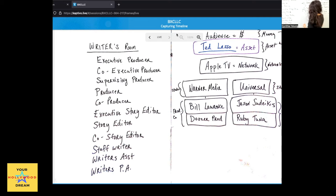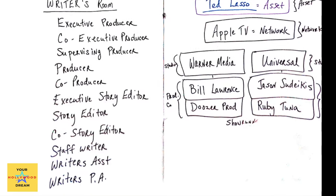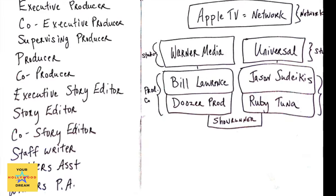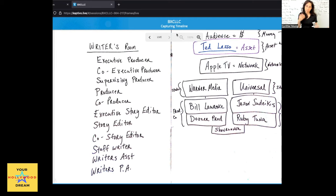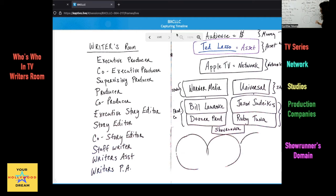And so you could say that these two entities here, between Doozer Productions and Ruby Tuna, would be the showrunner component. And if ever you take one of my classes, I often use the imagery of the three ring circus to visually show the showrunner's job is otherwise thought of as the factory of actually making the series.